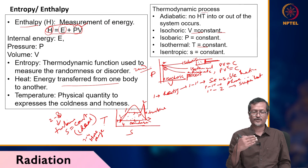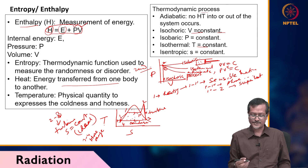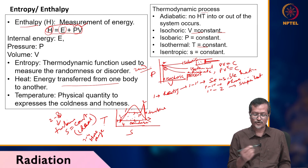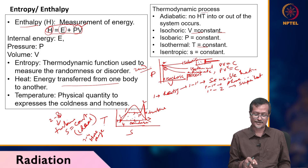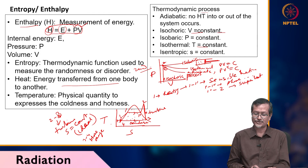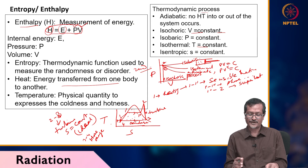A similar phenomenon happens in refrigeration systems but in the completely opposite direction. In the steam cycle, 1 to 2 (boiler) and 3 to 4 (condenser) are isobaric conditions — same pressure processes. The 2 to 3 process (turbine) involves pressure change and is isentropic. The 3 to 4 process (condenser) is also isothermal — temperature is not changing. You should identify which process is isothermal, isobaric, or isochoric.